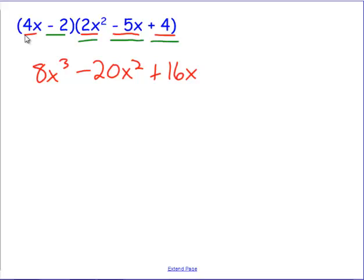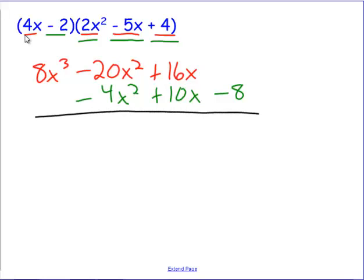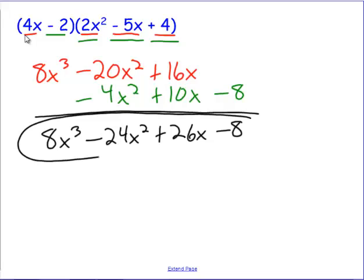Now I'm going to take a negative 2 times everything. Negative 2 times 2x squared gives negative 4x squared, notice how I'm setting this up to help me clean up down the road. Negative 2 times negative 5 gives positive 10x and then negative 2 times positive 4 gives negative 8. I've set myself up with the vertical method here to clean things up and I end up with 8x cubed minus 24x squared, plus 26x and then minus 8, that's my final answer.